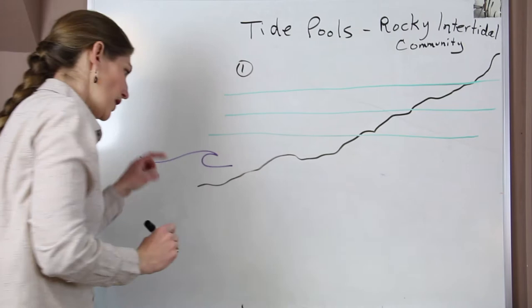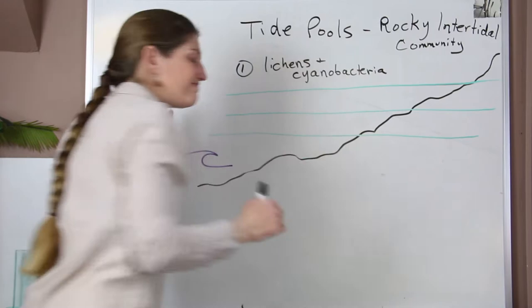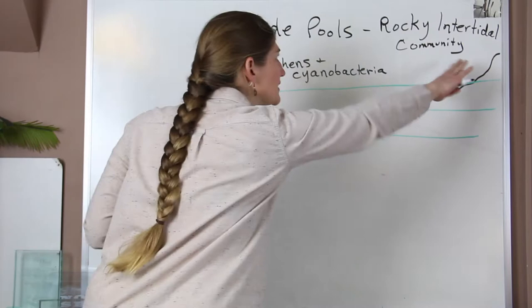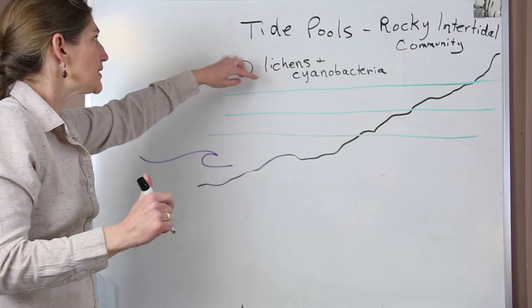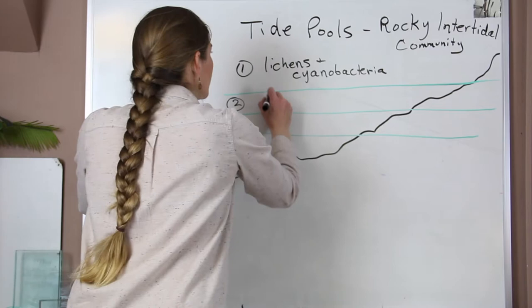In the top zone, zone number one, we find a lot of lichens and cyanobacteria. To a viewer looking at this, it's going to look very rocky and might be hard to actually see anything — not a whole lot. It's mostly exposed, highest up on the profile. When we look at that tidal range, this area is going to be exposed more of the time and just covered by water a little bit of the time, so it's definitely drier at the top.